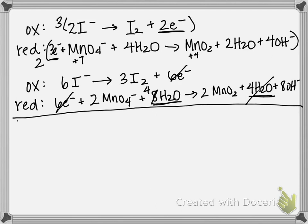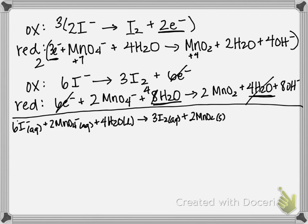So therefore my final equation is going to be 6 I minus, I'm going to write small so I can try and get this all in one line. So this is going to be 6 I minus plus 2 MnO4 minus plus 4 H2O gives me 3 I2, and that's not aqueous, I believe it's a solid. Oh no, they have it written as aqueous, apologize. Plus 2 MnO2, which is a solid, plus 8 OH minus. I had a little room left over so I could have written a little bigger.